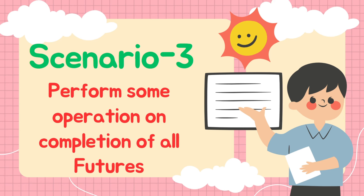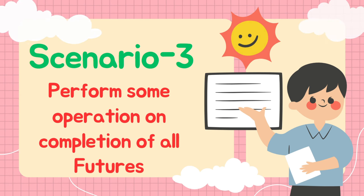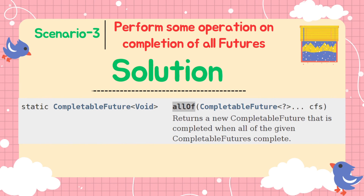Now let us discuss a couple more scenarios. Sometimes there are requirements to perform a group of tasks and once all the tasks are complete in the group, then generate a report using the execution results. This can be easily handled using the allOf method present in CompletableFuture. This method expects an array of CompletableFutures. To demonstrate this, we are going to take a real-life example which I have implemented in one of my projects as well. Suppose we have a list of servers and we want to connect to every server to execute a command to identify which operating system is currently running, and once the command is executed on all the servers, then generate a collective report.